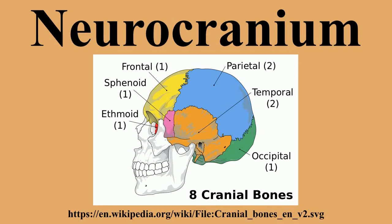Structure: the neurocranium is divided into two portions — the membranous part, consisting of flat bones which surround the brain, and the cartilaginous part, or chondrocranium, which forms the bones of the base of the skull.